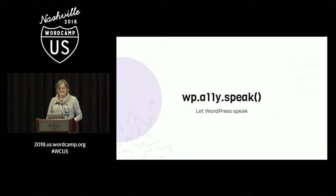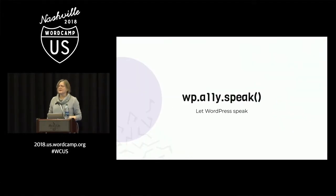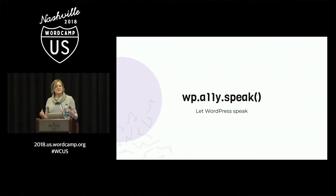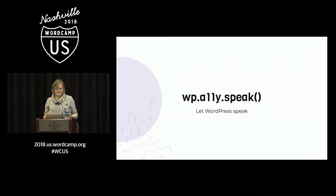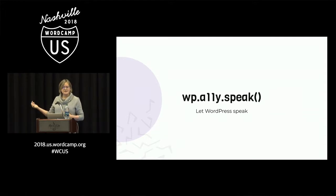In WordPress, we have the JavaScript method WP.speak, which is built into core and you can use it. In the accessibility handbook at wordpress.org, it's completely written out how that is done — there is a link in the slides.